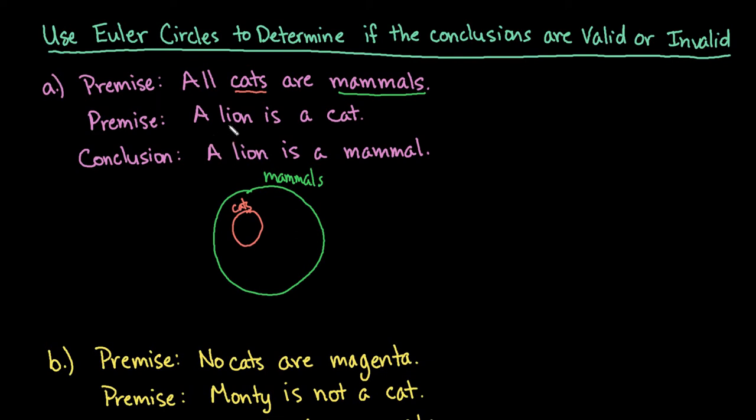Our second statement says that a lion is a cat. So there's only one place that I can put the lion and that's inside of the circle of cats because we know it's inside of there. And so because of the fact that there's only one place to represent that we have a lion, we can say that this conclusion is valid because since the lion is inside of the group cats and cats is inside of the group of mammals, we can conclude that a lion is a mammal.